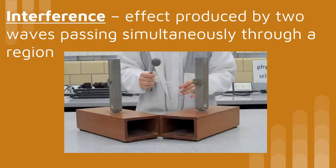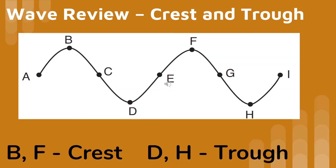The alternating loud and low sounds come from the constructive and destructive overlap of these two sound waves. Let's start with a review of the words crest and trough. The crest is the high point in the wave, and the trough is the low point. The crests are B and F, and the troughs are D and H.